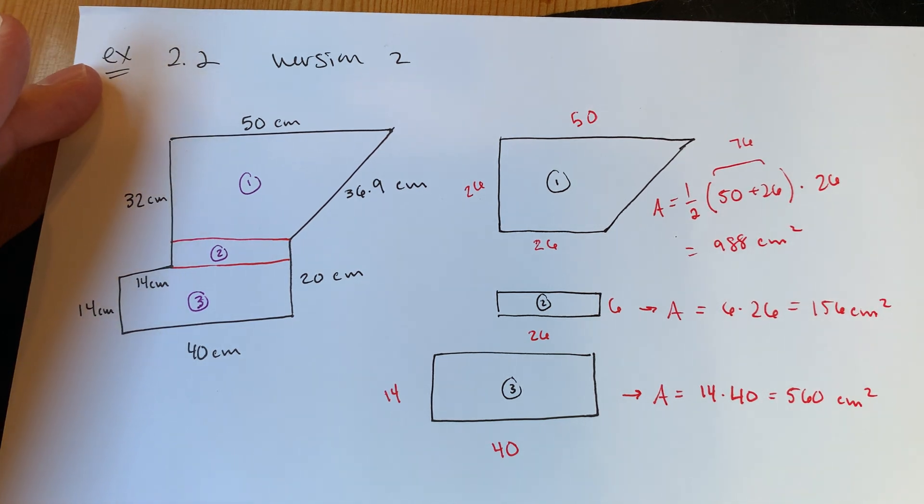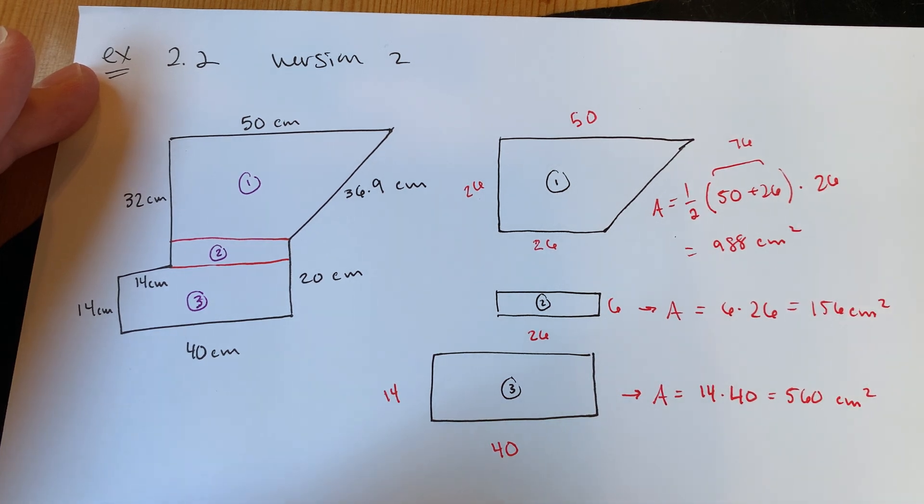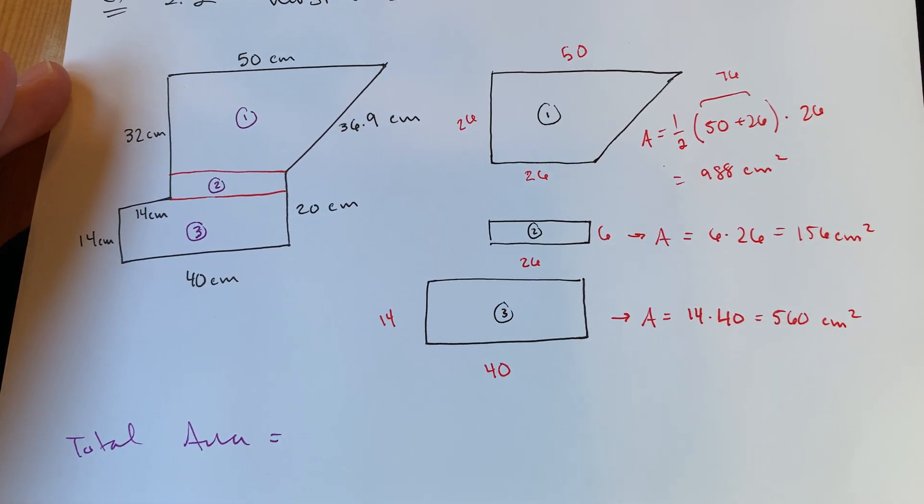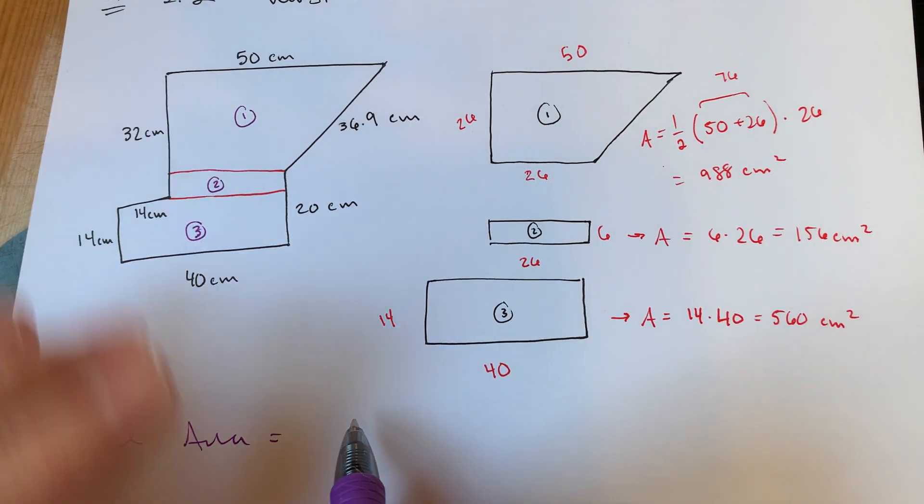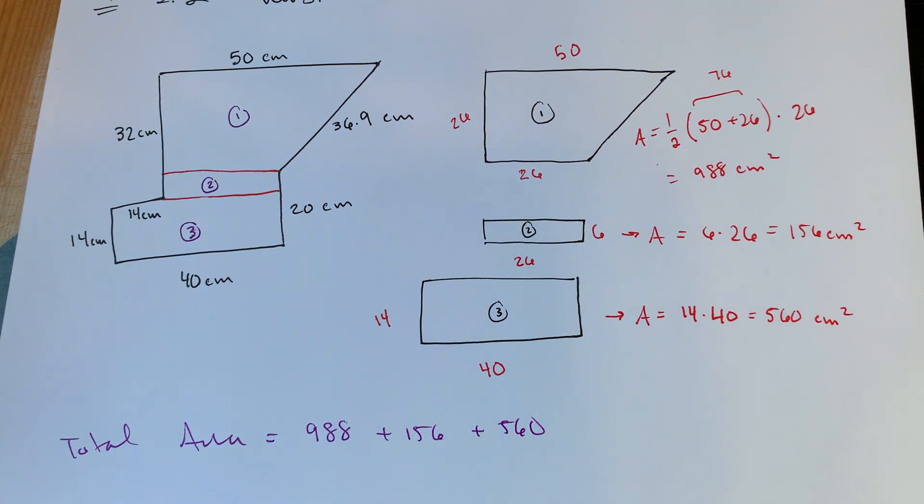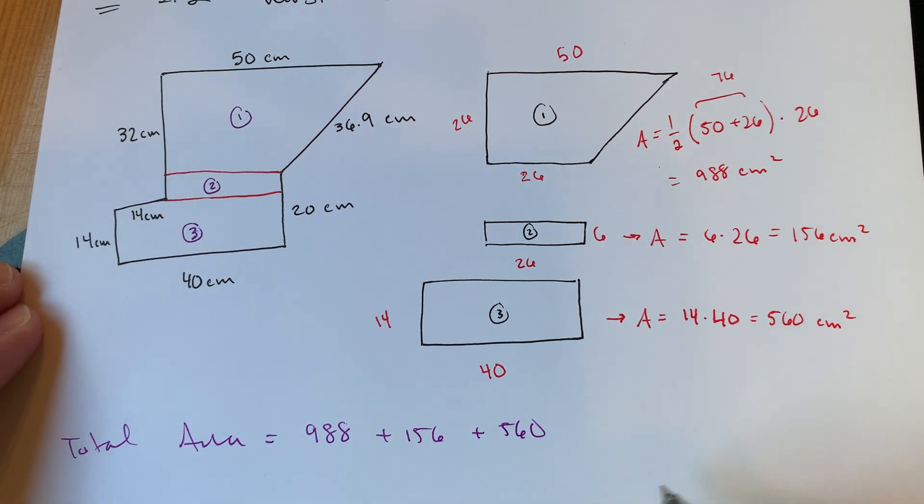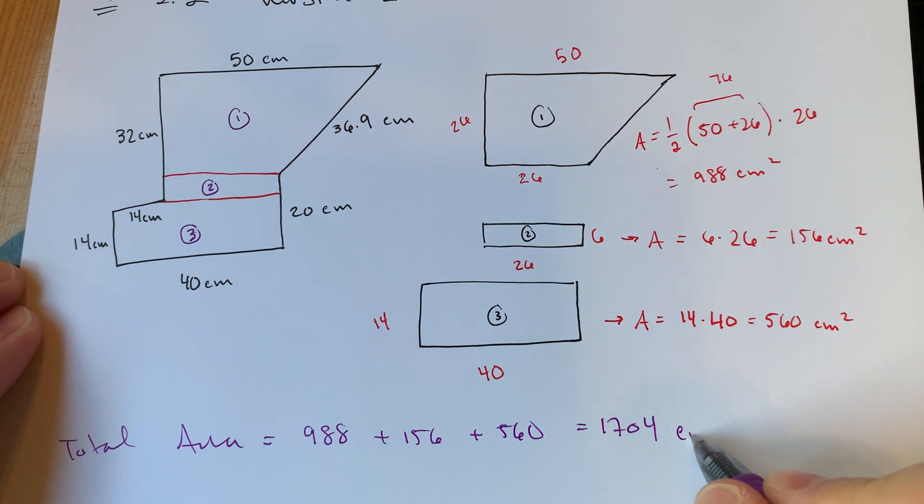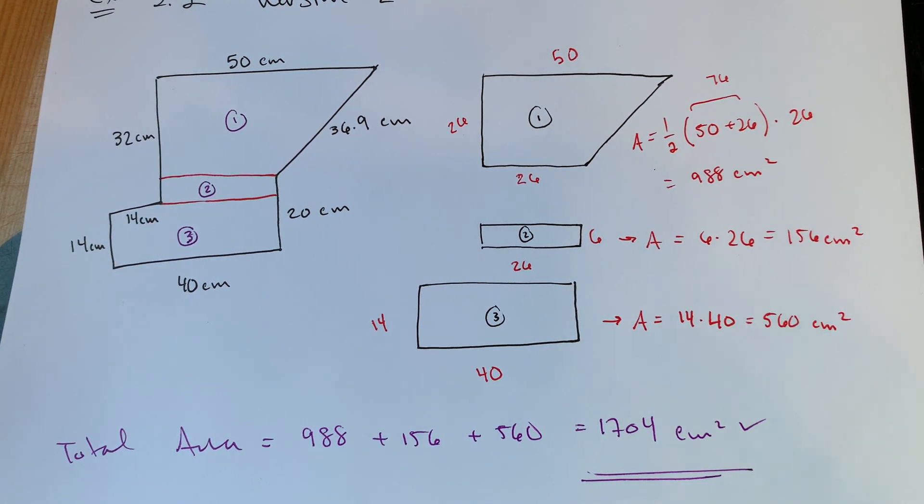Three different regions, three different areas. Moment of truth: our total area should be area one plus area two plus area three. Let's see if we're going to end up in the same spot as the one we just did. 988 plus 156 plus 560: 1704. I don't remember - yes, that is just as I always planned, and that's that.